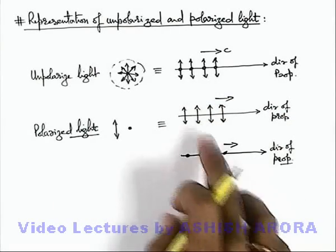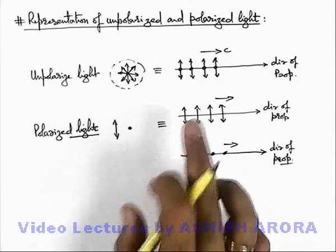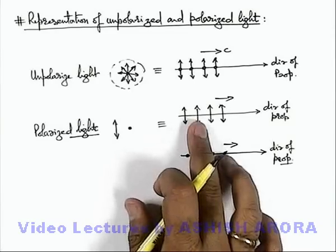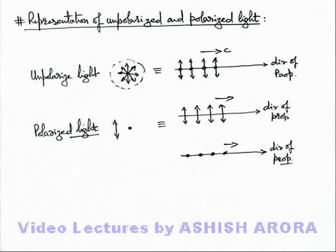So these are two ways by which we can represent polarized light on paper. But you must be very careful that either of these two will be present. Both if simultaneously present, that will become the representation of an unpolarized light.